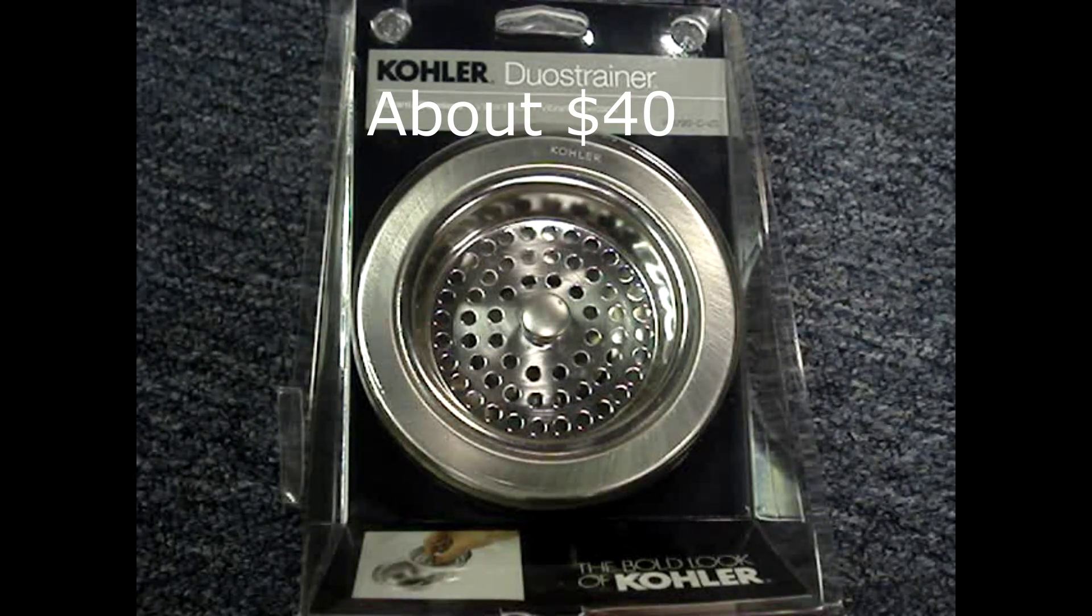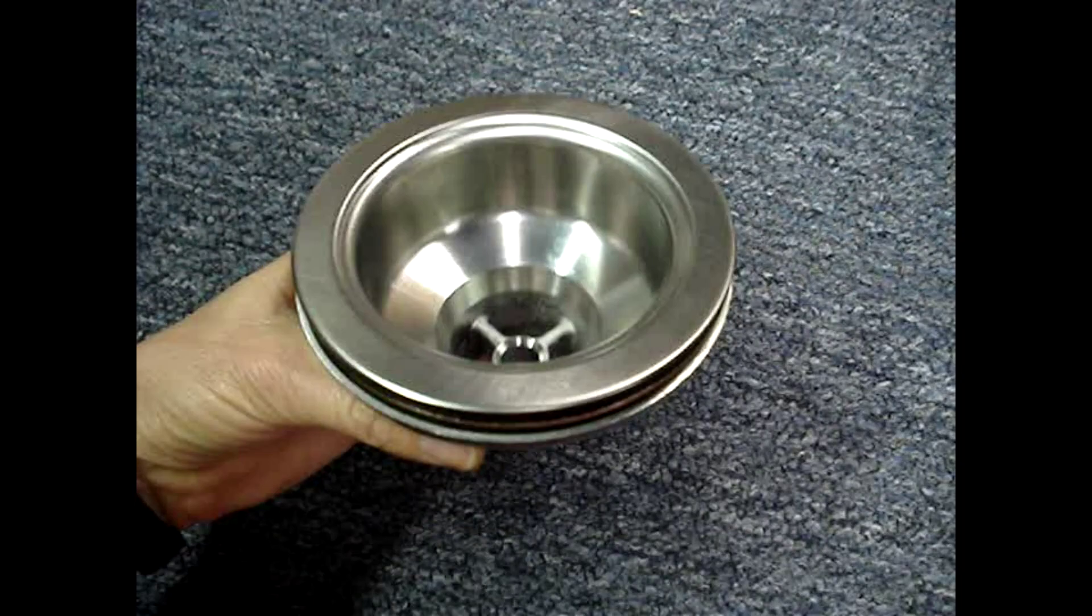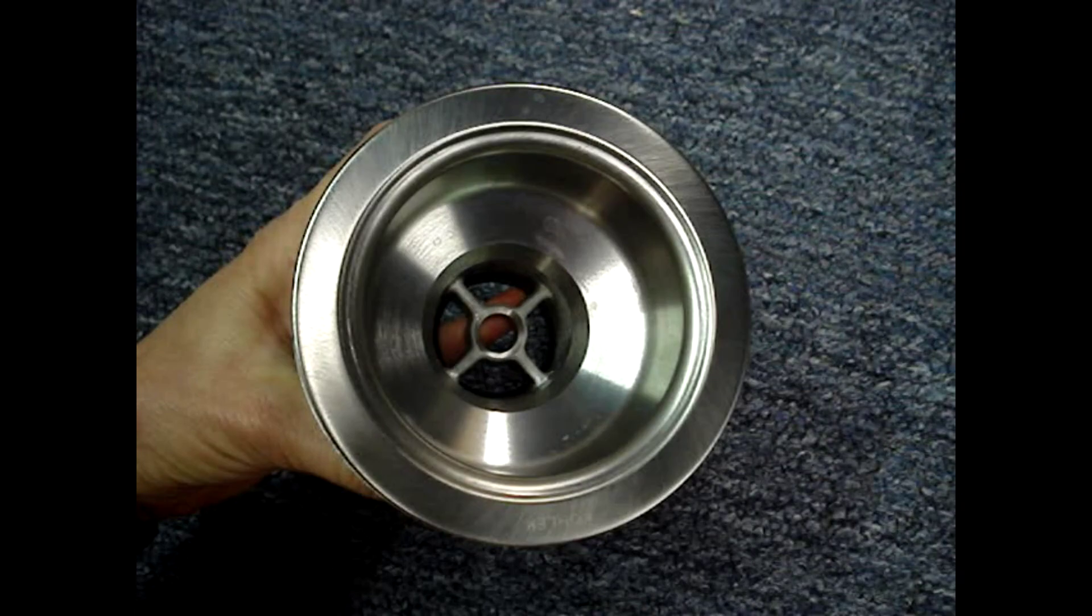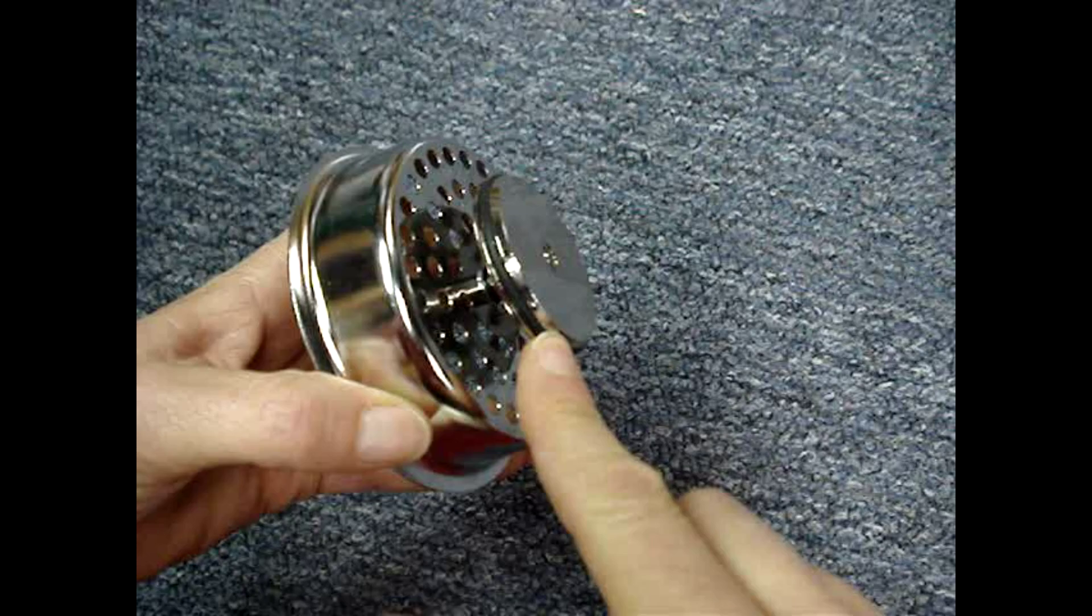I'll be installing a Kohler Duo strainer in a kitchen sink. The sink strainer body is made of brass and weighs about a pound. The strainer basket uses an o-ring to seal the drain. I bought some spare o-rings to replace it when it starts to leak.